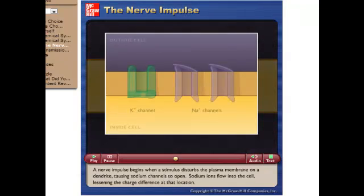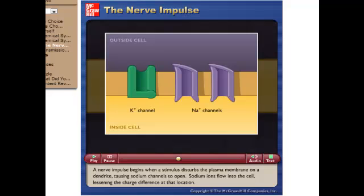A nerve impulse begins when a stimulus disturbs the plasma membrane on a dendrite, causing sodium channels to open. Sodium ions flow into the cell, lessening the charge difference at that location.